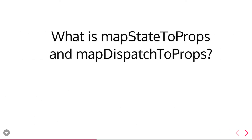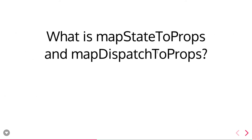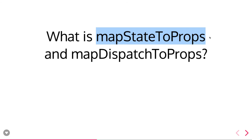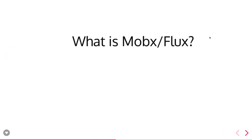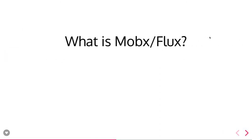What are mapStateToProps and mapDispatchToProps? These two methods are the way to access state from the Redux library or trigger actions to Redux. mapDispatchToProps helps us trigger actions to Redux, while mapStateToProps helps us capture state from the Redux library. Both methods are provided by the React-Redux library, and in the connect function we just pass them to capture state and trigger actions.